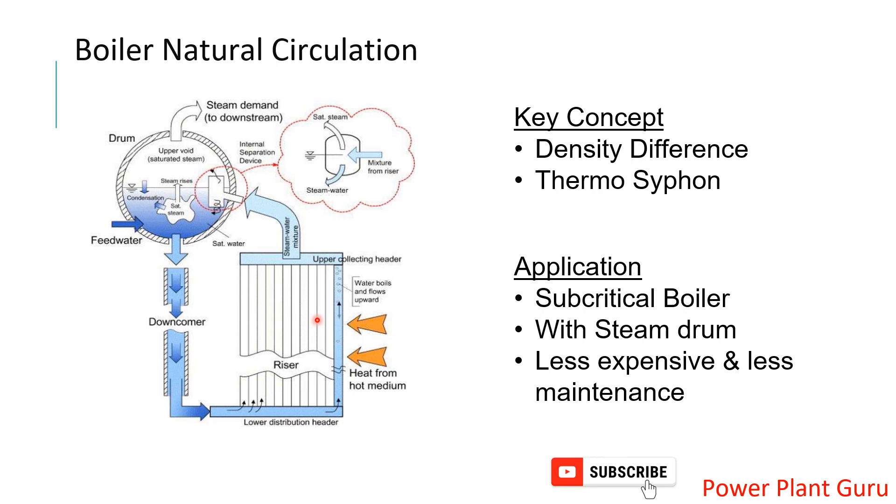The riser tubes get heat from the boiler, while the downcomers are separated from that heat by baffle plates or by being outside the heat transfer zone. This creates a colder zone in the downcomers and relatively higher temperature in the risers, establishing a temperature difference.